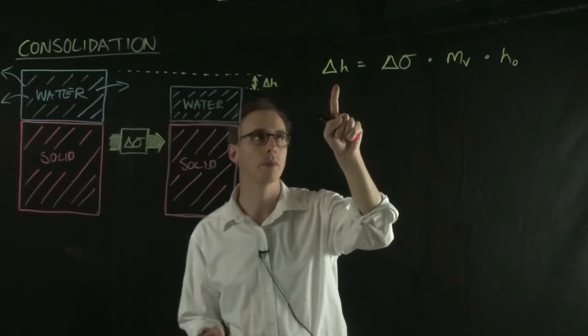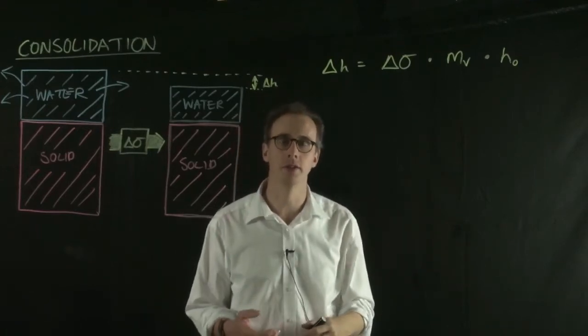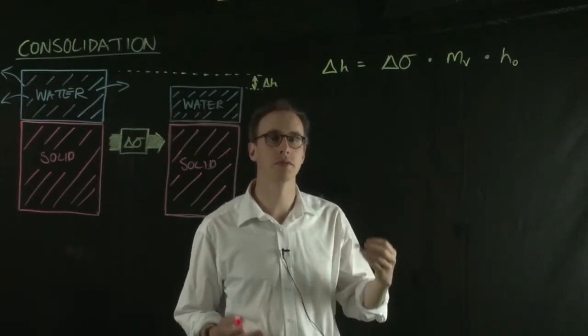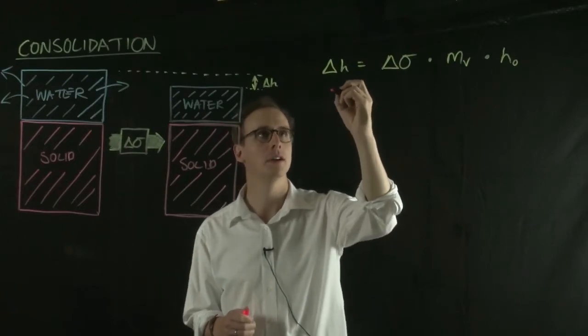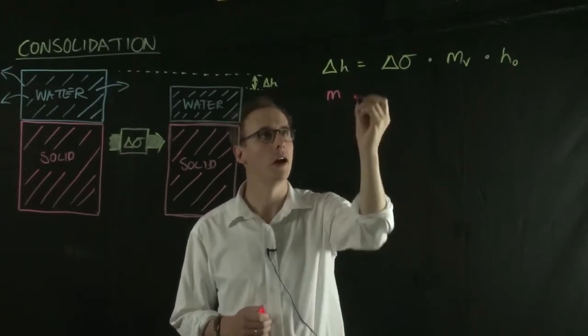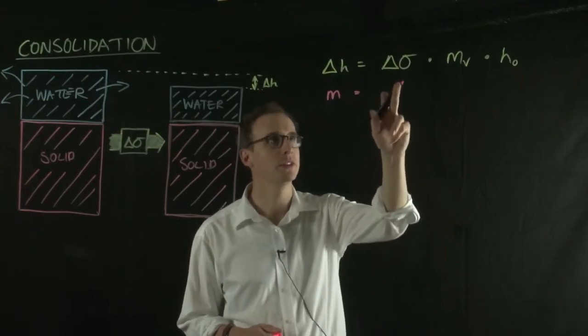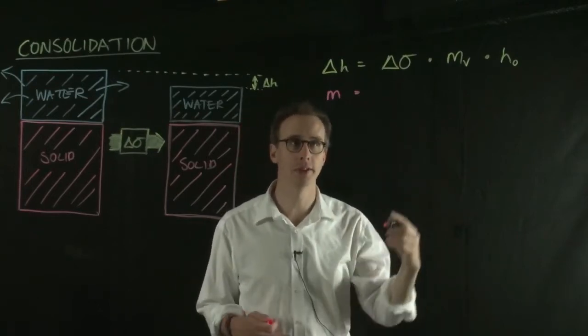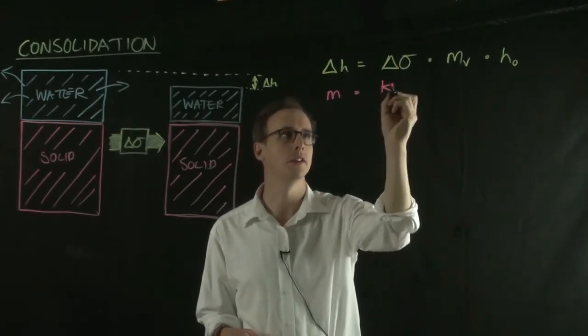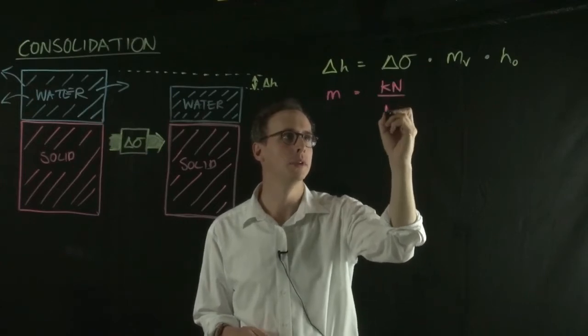Well, your delta H has units of length, so let's write that in terms of meters. You have a meter, a length unit here. You have a change in stress, which has stress units—let's say kilonewtons per meter squared.